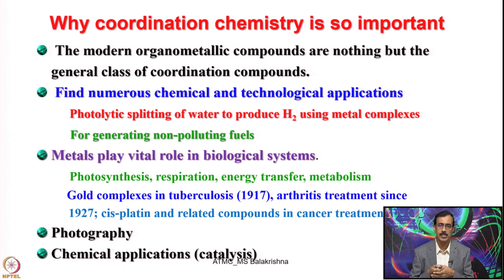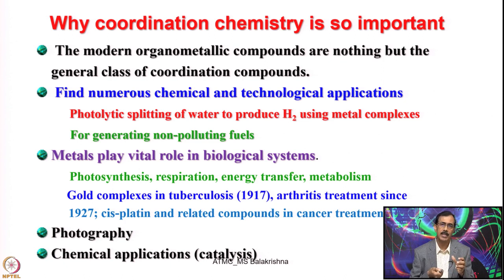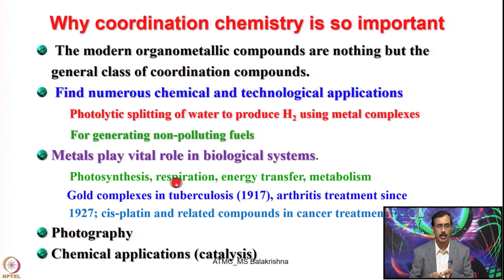We talk about metalloenzymes. Enzymes observed in plants as well as living beings have no identity if the metal present in their system is taken out — that indicates the importance of metals in biological systems. Consider photosynthesis, respiration, energy transfer, metabolism — every biological process involves a metalloenzyme. Most metals in biology look like a metal complex.